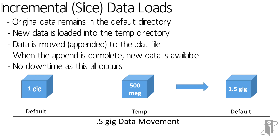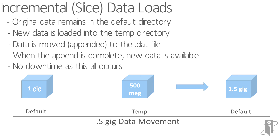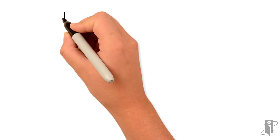There's no downtime for the users because the original data is still sitting there. Only when the movement of that 500 megs is complete, it's like a little switch flipped on and makes it available to the users. So it's much, much faster. That's ASO incremental data slices.